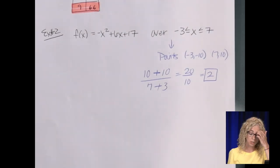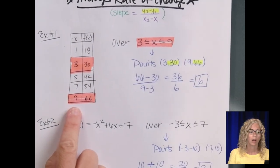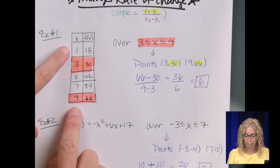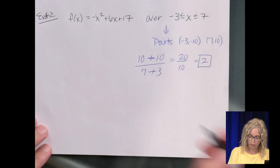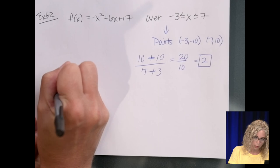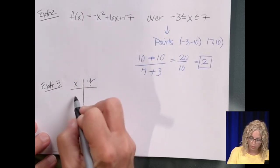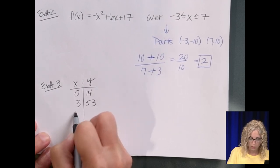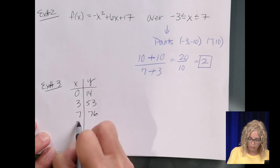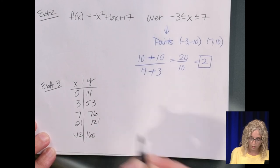So then, we have a multiple choice question. Let me make another example. Example number 3, our table, this time they use x and y, has the points 0, 14; 3, 53; 7, 76; 21, 121; and 42, 160.